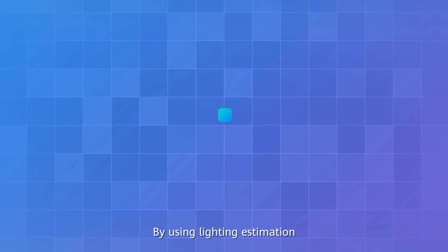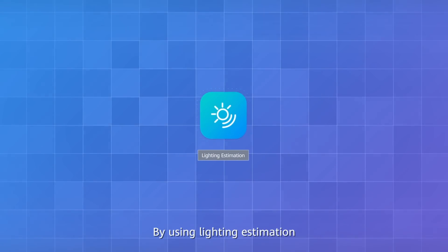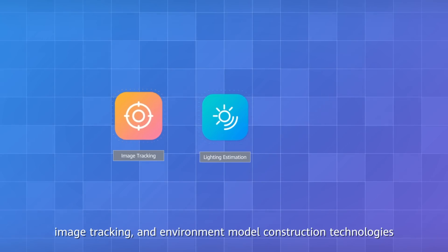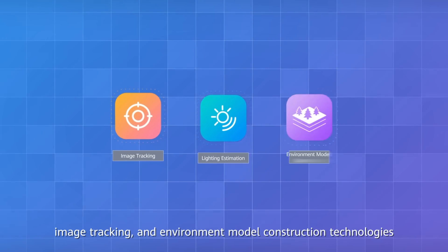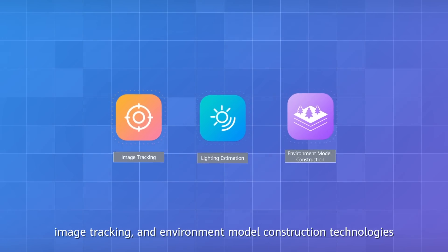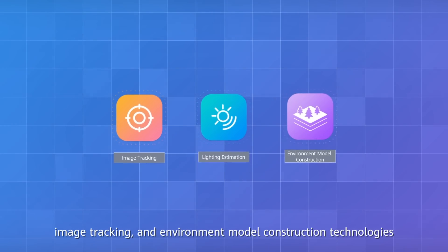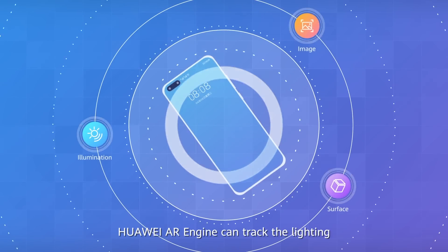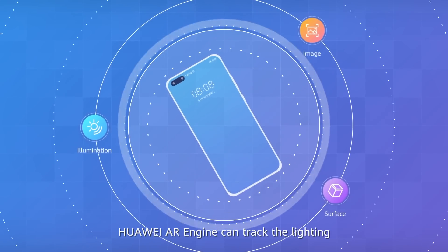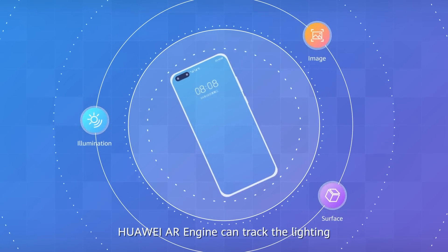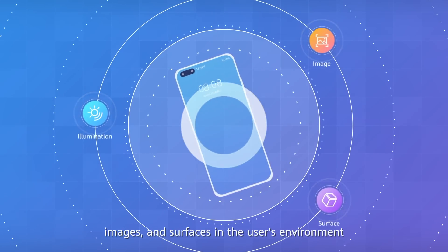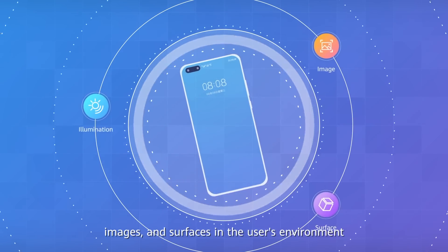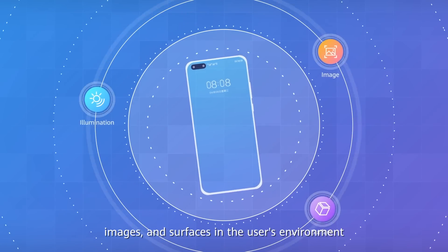By using lighting estimation, image tracking, and environment model construction technologies, Huawei AR Engine can track the lighting, images, and surfaces in the user's environment.